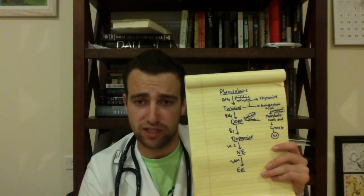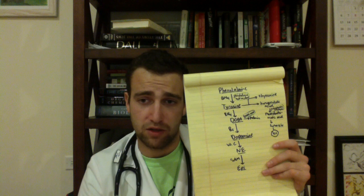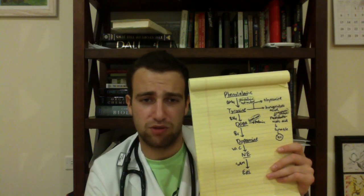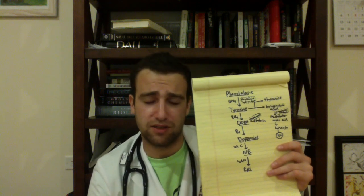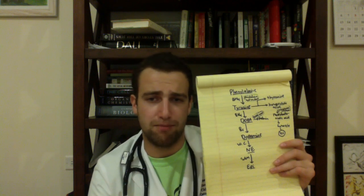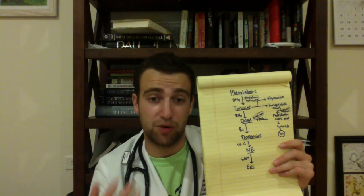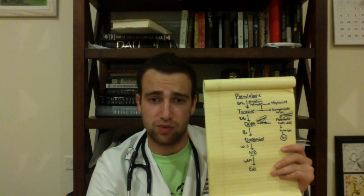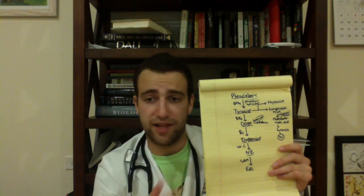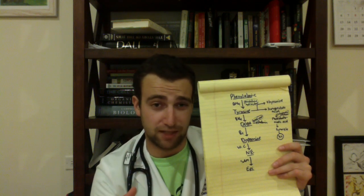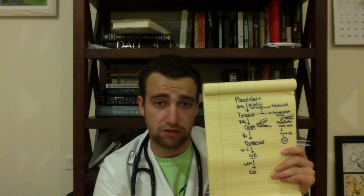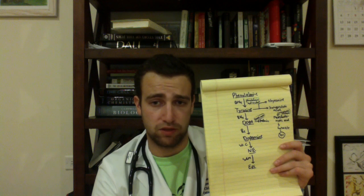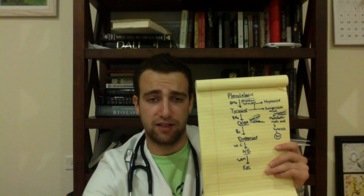Phenylketonuria is also autosomal recessive. We screen three days after birth. If you have this disease, you can't process phenylalanine, so we accumulate phenylketones. This causes intellectual disability, growth stunting, seizures, fair skin, eczema, and a musty or mousy body odor, because this is an accumulation of an aromatic compound. Tyrosine then becomes an essential compound, so we need tyrosine in the diet. We treat this condition by avoiding phenylalanine altogether — including aspartame, the sweetener, because that gets metabolized to phenylalanine — and by eating more tyrosine-containing foods. There's also a condition called maternal PKU, where the child is born with all the same features, but they also have microcephaly and congenital heart defects.